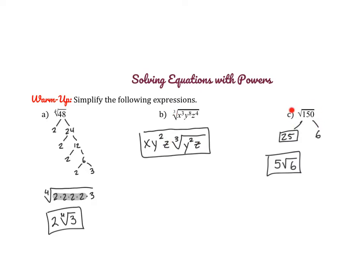And then for part C, a square root of 150. So I noticed that 150 is divisible by 25, which is a perfect square. The square root of 25 is 5, so that's how we got 5 root 6.